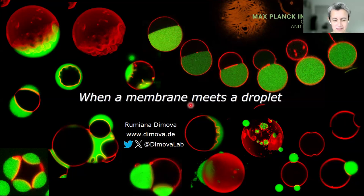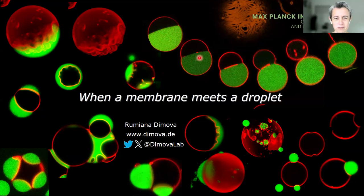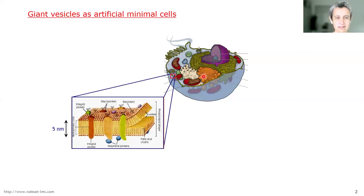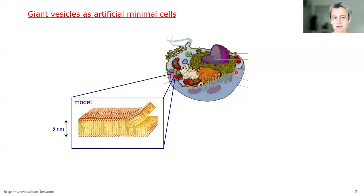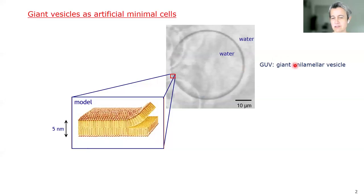It's a pleasure to be here and I'm going to talk about membranes and droplets. The membranes you already see here but I'm going to introduce them with another slide. These are giant vesicles. We start with a textbook picture of the cell: if you throw out all the organelles and also remove the proteins, what you're going to end up with is a giant vesicle.